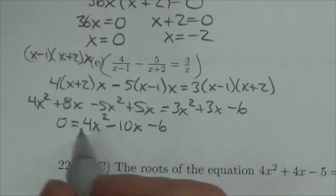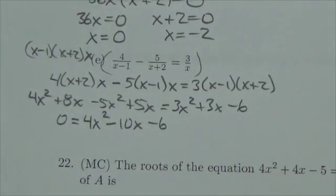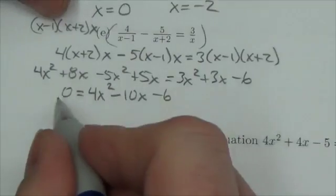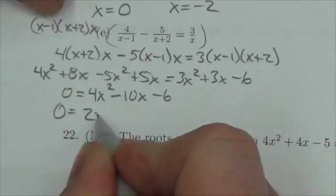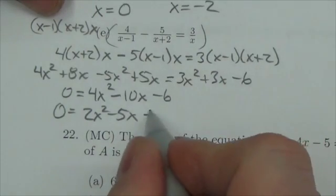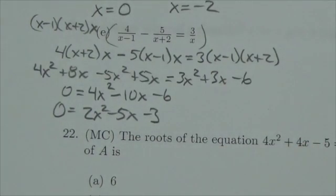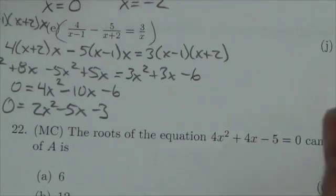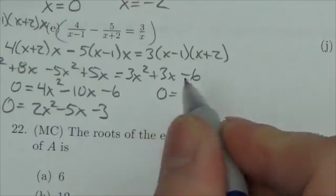There's a common factor of 2 to all of these numbers now. I'm lazy - I want to work with small numbers, so I'm going to divide everything through by 2. So 0 equals 2x squared minus 5x minus 3. Now my hope is that this can factor.